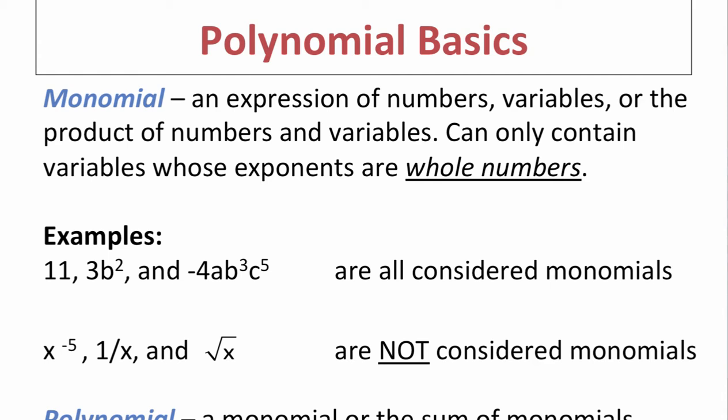The second row shows things that are not considered monomials. We are not allowed to have negative exponents, so x to the negative fifth is not a monomial. We are not allowed to have a variable on the denominator of a fraction, so 1 over x is not allowed as a monomial. Also, special characters like the square root of x are not considered monomials.